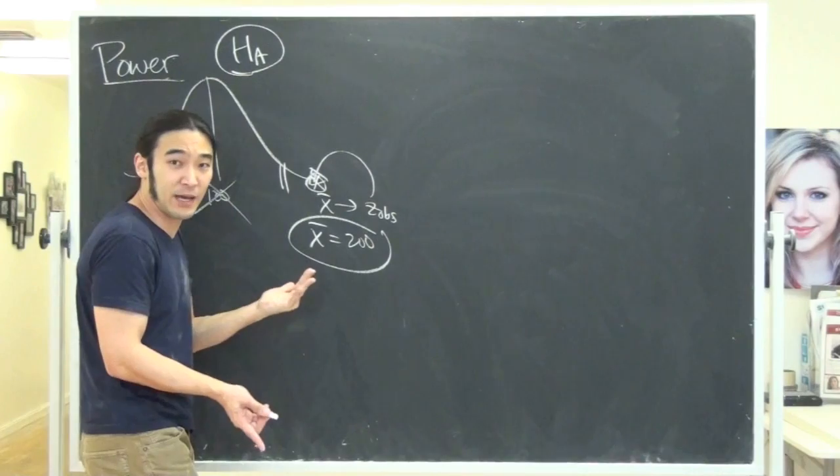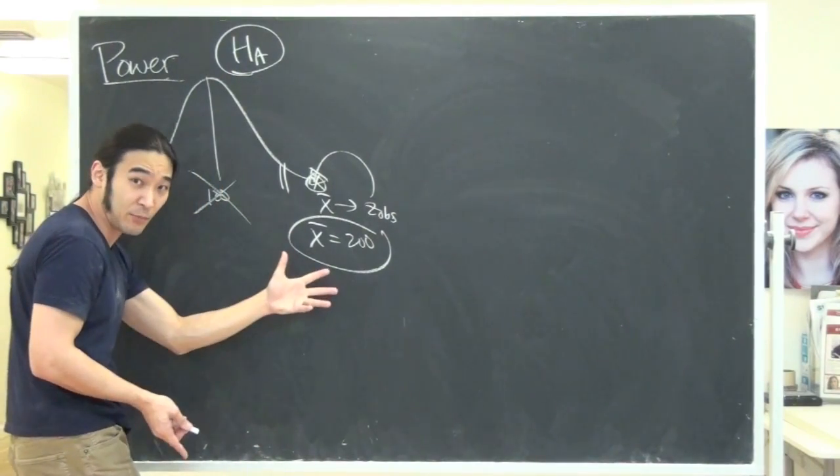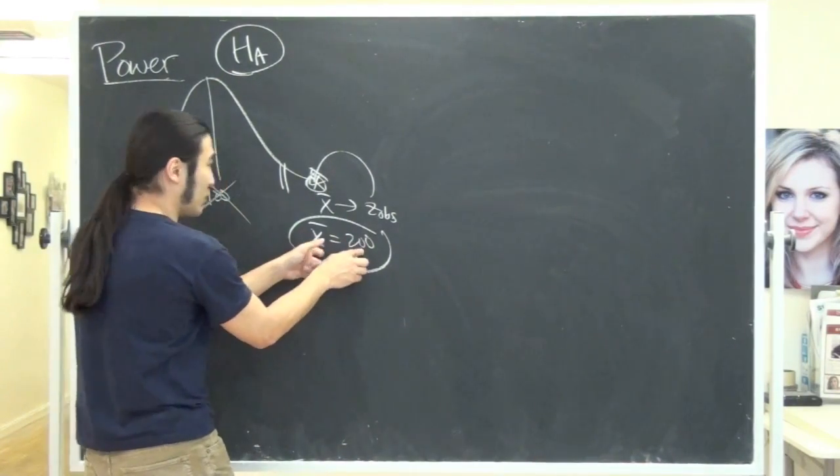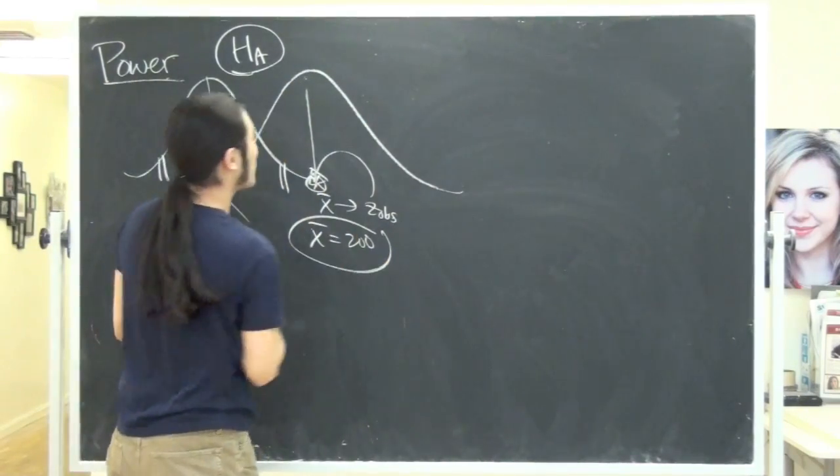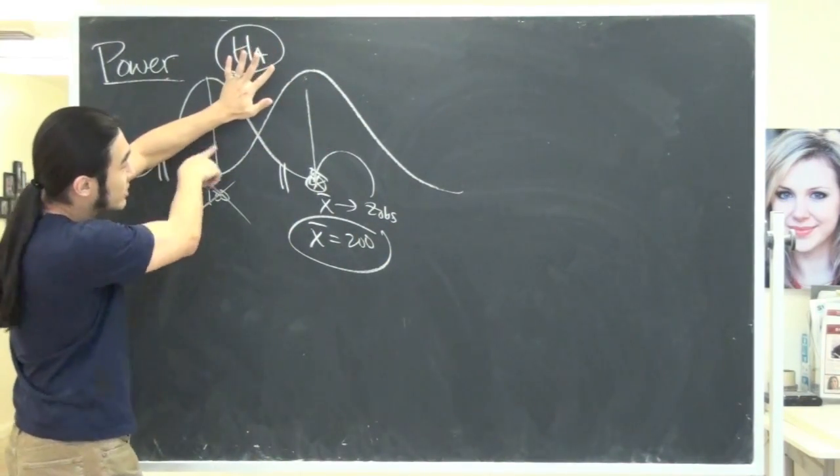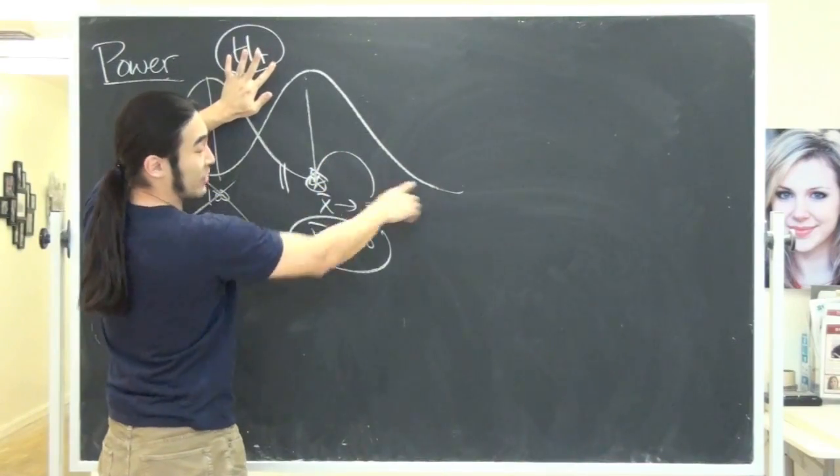If the average isn't 100, what's your best bet? All you have to go by is your sample. So we'll assume that the sample is really where the average is. So now this is your new curve. This is not true because this is wrong. This is the truth right over here.